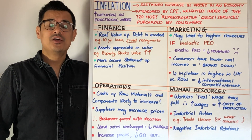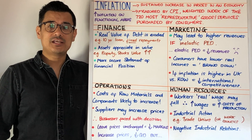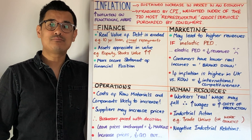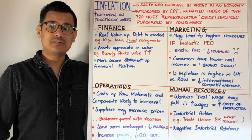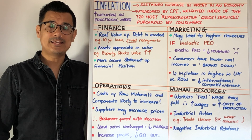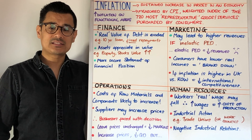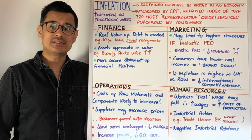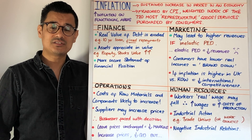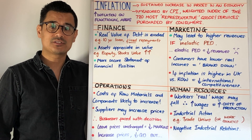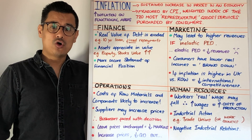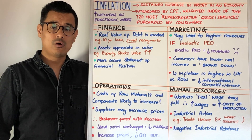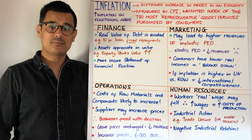Let's have a session on inflation. Inflation is a sustained rise in prices within an economy, and it's measured by the CPI — the Consumer Price Index — which is a weighted index containing the 720 most representative goods and services purchased by consumers. In this video, I want to look at the impact of increasing or high inflation on the functional areas within a business.